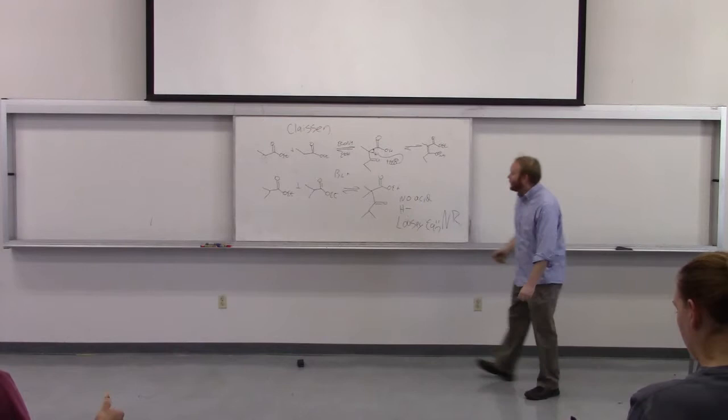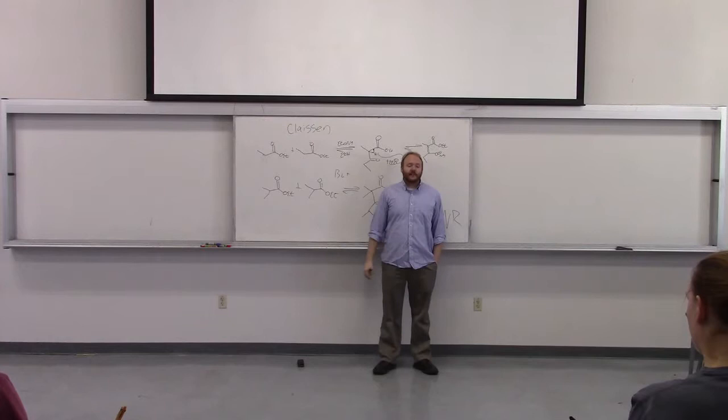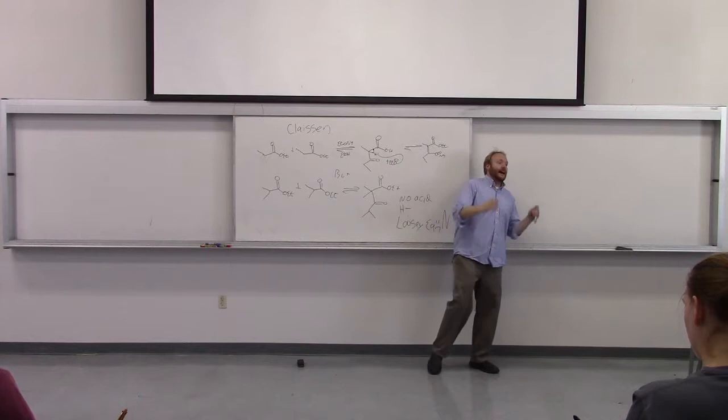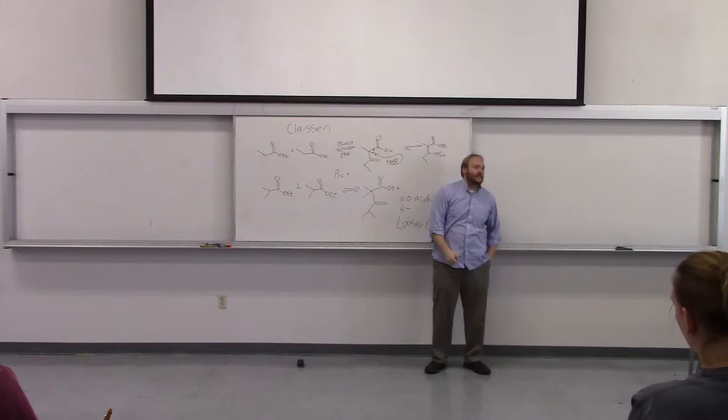Let's finish off the Claisen. The Claisen is the reaction of two equivalents of an ester. Everything discussed so far has been a homo-Claisen: one ester becoming an enolate and attacking another equivalent of the parent ester. That gives us a product like this.